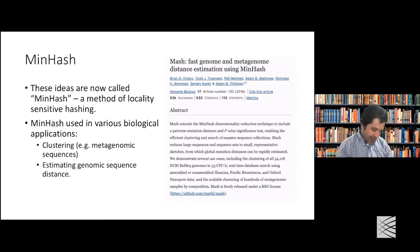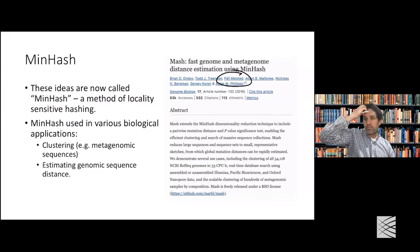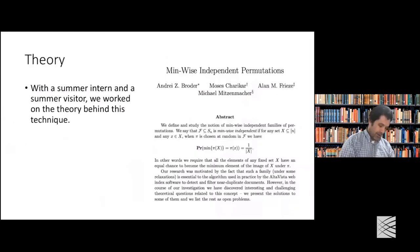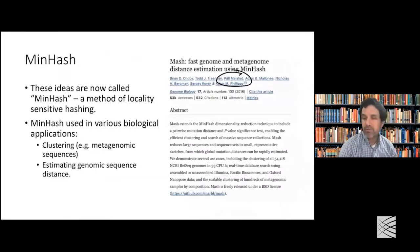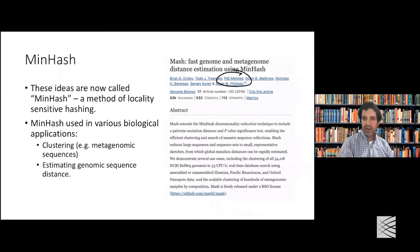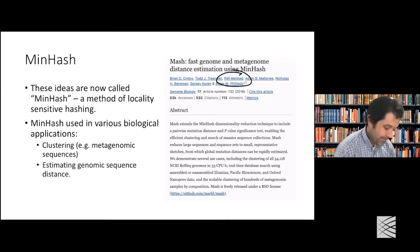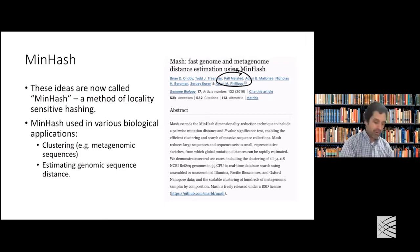Paul Melstead was a graduate student of Alan Frieze, who was part of this original paper. I actually worked with Paul and Alan on papers related to cuckoo hashing. Paul is now in Iceland as a professor working on algorithmic biology and applications of algorithmic ideas to biological problems.